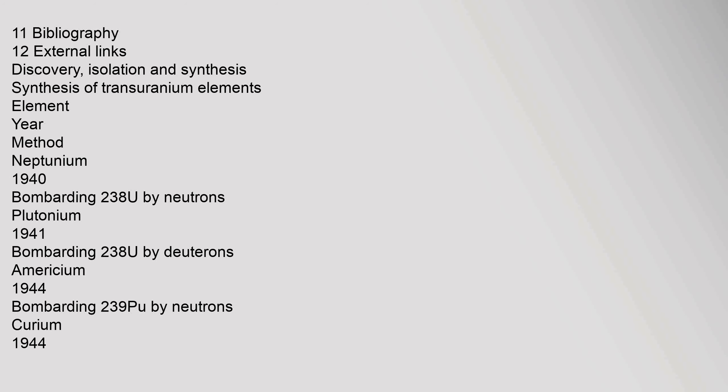Bibliography. External links. Discovery, isolation and synthesis. Synthesis of transuranium elements: Neptunium 1940, bombarding 238U by neutrons; Plutonium 1941, bombarding 238U by deuterons; Americium 1944, bombarding 239Pu by neutrons.